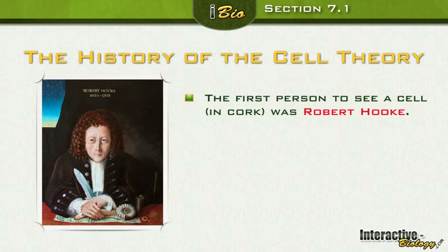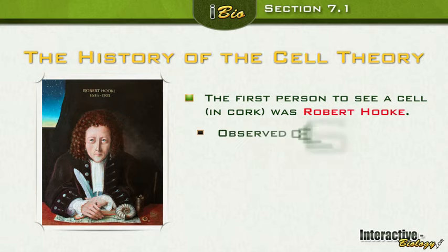The next person we're going to talk about is Robert Hooke. You need to know how to spell these names — if it's misspelled significantly, you lose all the points; if it's just a little off, you might lose a half point. He observed cells in cork.